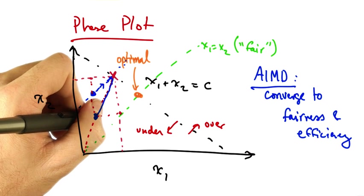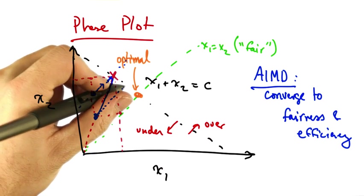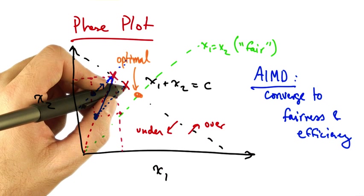At this point, the senders will again increase their sending rate along a line that's parallel to x1 equals x2, until they hit overload again.